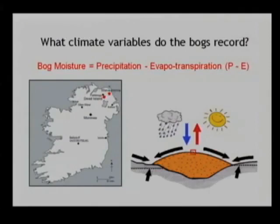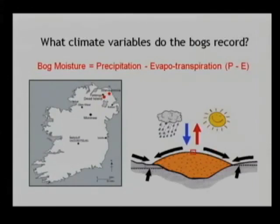I'm going to be referring to some work from a couple of sites in the north of Ireland: a site called Dead Island Bog, which is a lowland-raised bog, and one slightly to the north on the Antrim Plateau. If any of you have visited Northern Ireland, the Giant's Causeway is just a little to the north there. So that's an upland-raised bog, Slevanora.